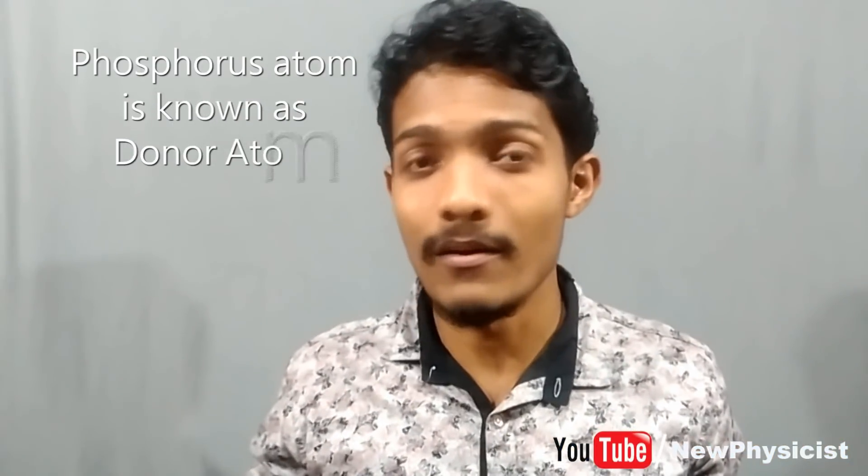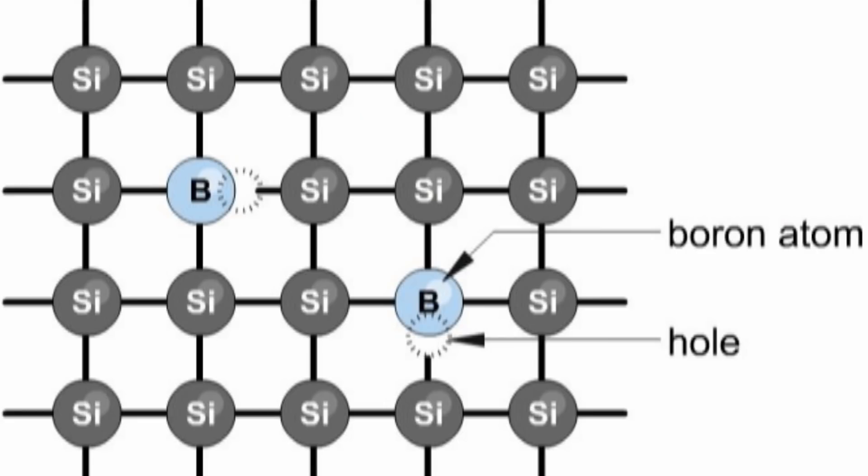If we add boron — boron has three valence bond electrons — and replace a silicon atom with boron, there will be a missing electron, a lack of electron in a bond. That missing electron is known as a hole. A hole is not a physical particle; it is simply a missing electron. Since electrons have negative charge, a missing electron can be given a positive charge. So the semiconductor made by doping with boron is called p-type semiconductor.